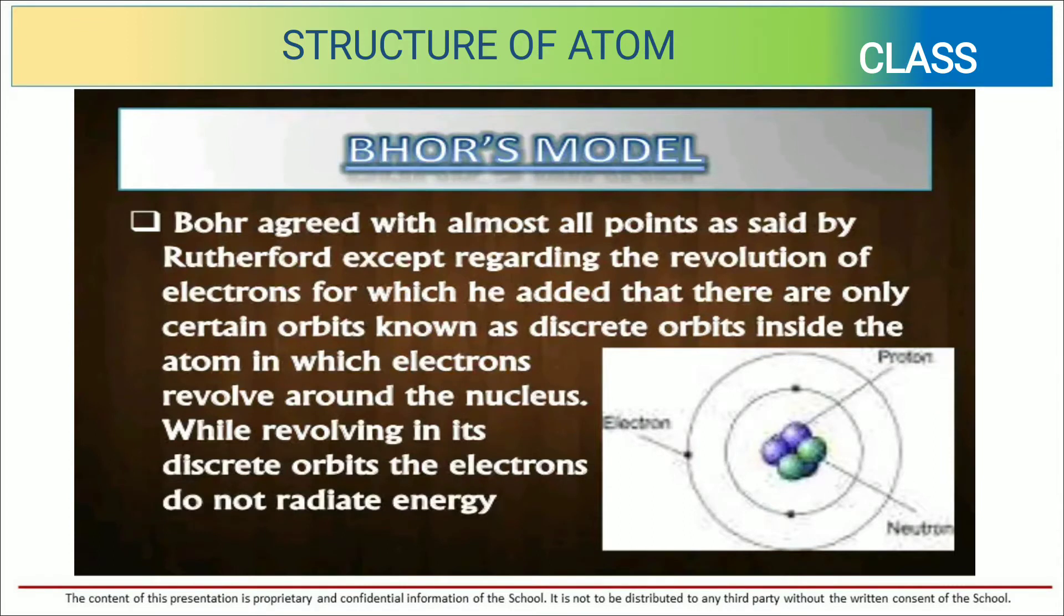Bohr agreed with almost all the points as said by Rutherford except regarding the revolution of electrons for which he added that there are only certain orbits known as discrete orbits inside the atom in which the electrons revolve around the nucleus. While revolving in its discrete orbits, the electrons do not radiate energy.